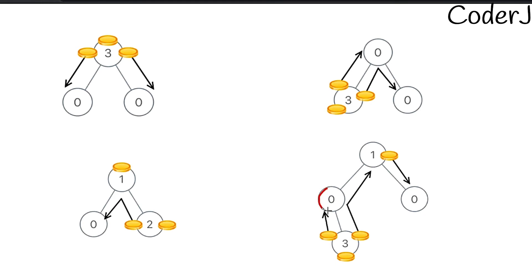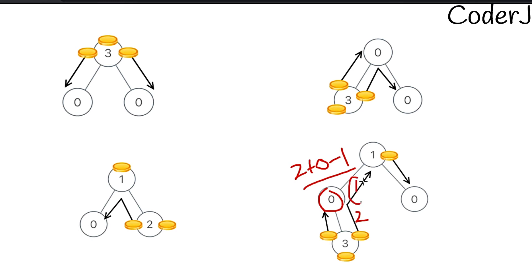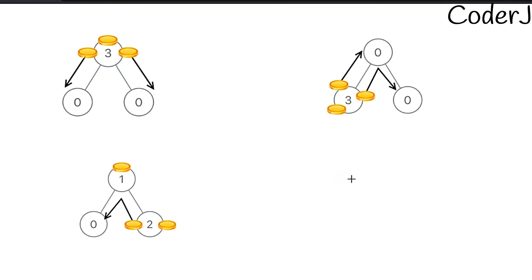The number of steps a parent requires is the sum of how many steps its left child and right child require. The value a node returns is: left_steps + right_steps + (node's own coins - 1). For example, the right child returns two, plus zero coins the parent has, minus one (since it needs one for itself), so it returns exactly one coin, costing one move.